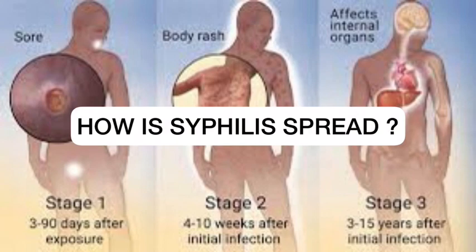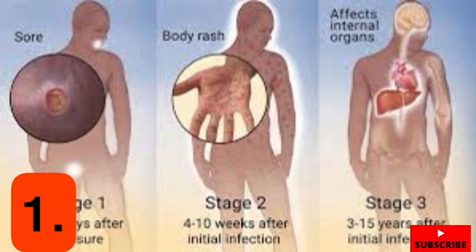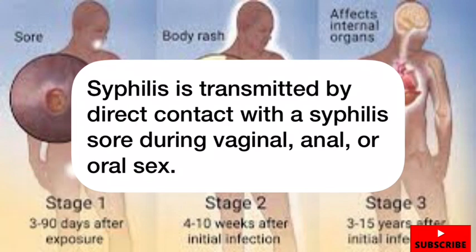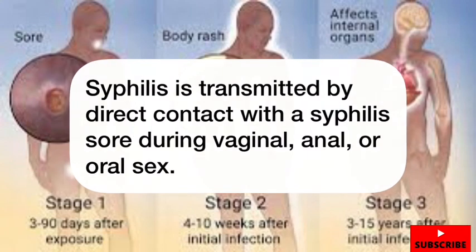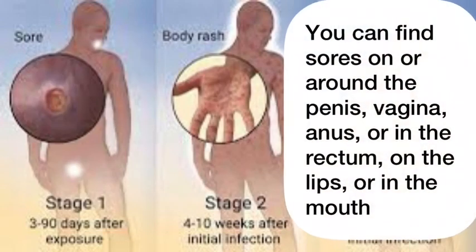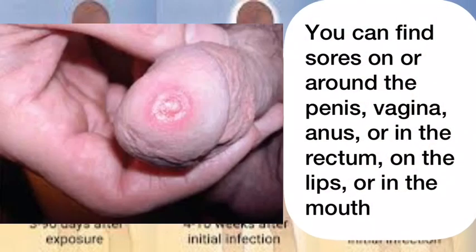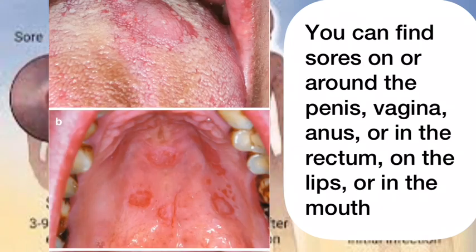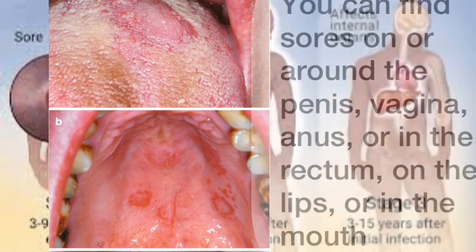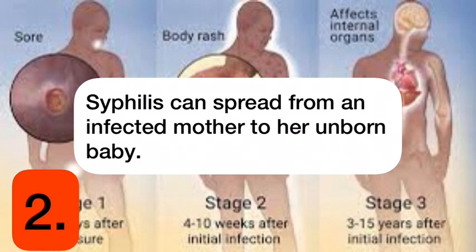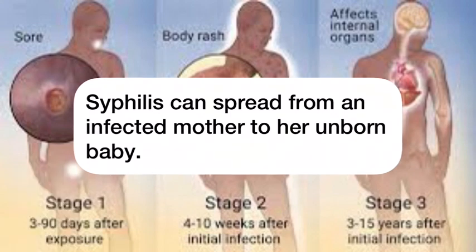How is syphilis spread? Syphilis is transmitted by direct contact with a syphilis sore during vaginal, anal, or oral sex. You can find sores on or around the penis, vagina, anus, or in the rectum, on the lips, or in the mouth. Syphilis can also spread from an infected mother to her unborn baby.